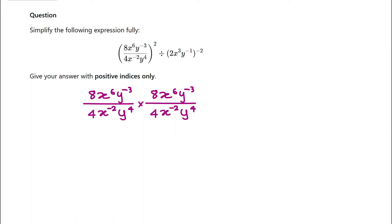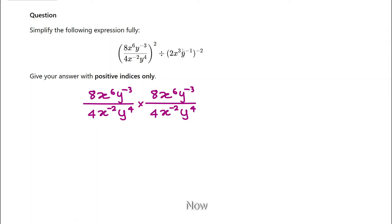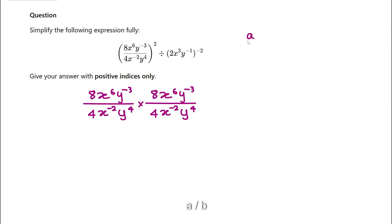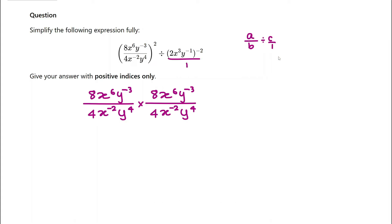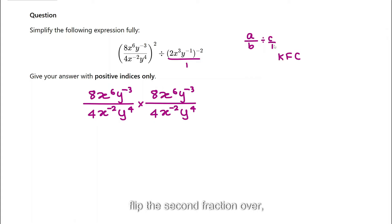I need to multiply this expression by itself, so let's do that. Now I need to divide it by this expression. If you have a fraction a over b divided by c, I write c over 1. I can do the same thing here. What we do is apply KFC: keep the first fraction as it is, flip the second fraction over.